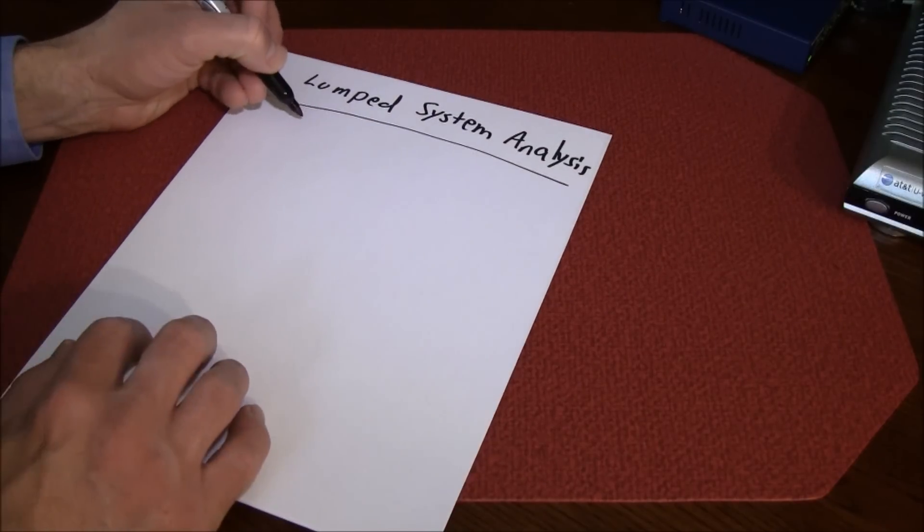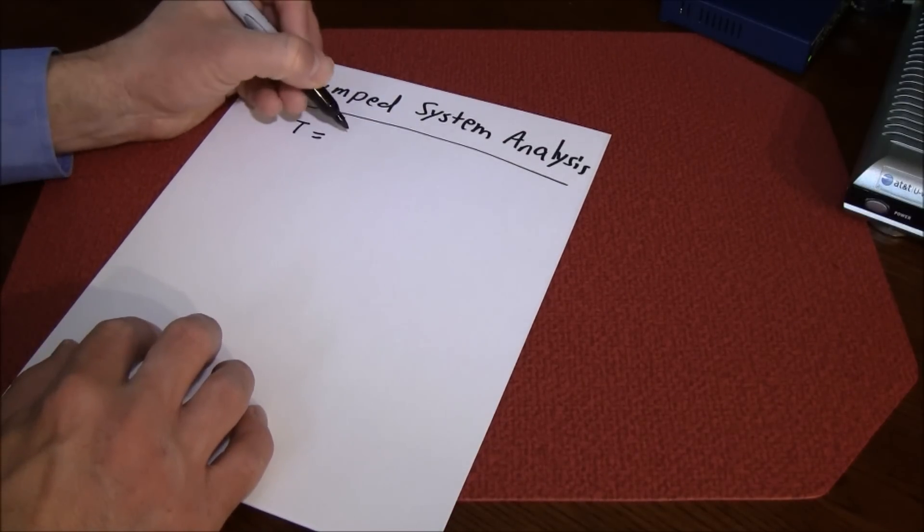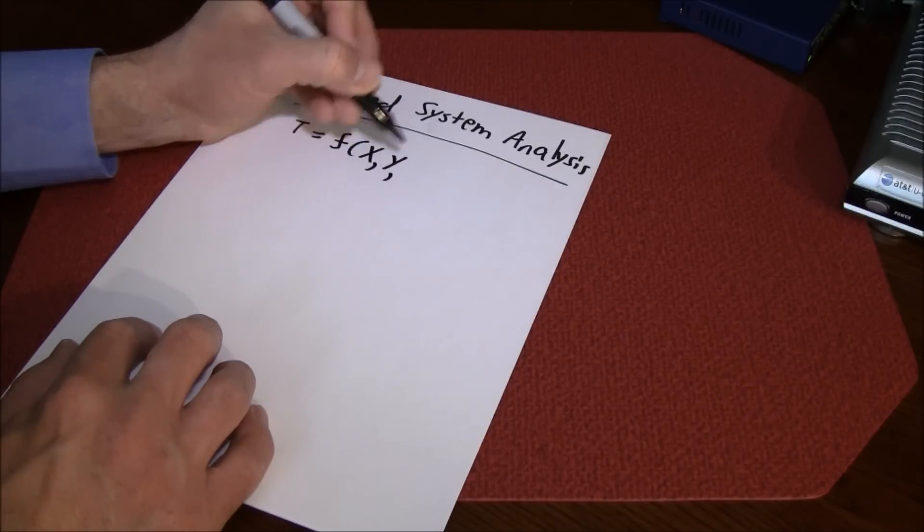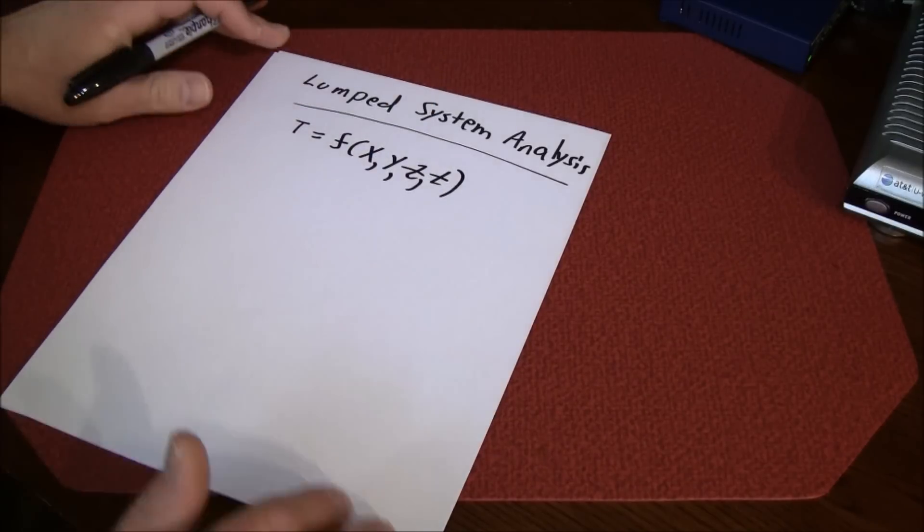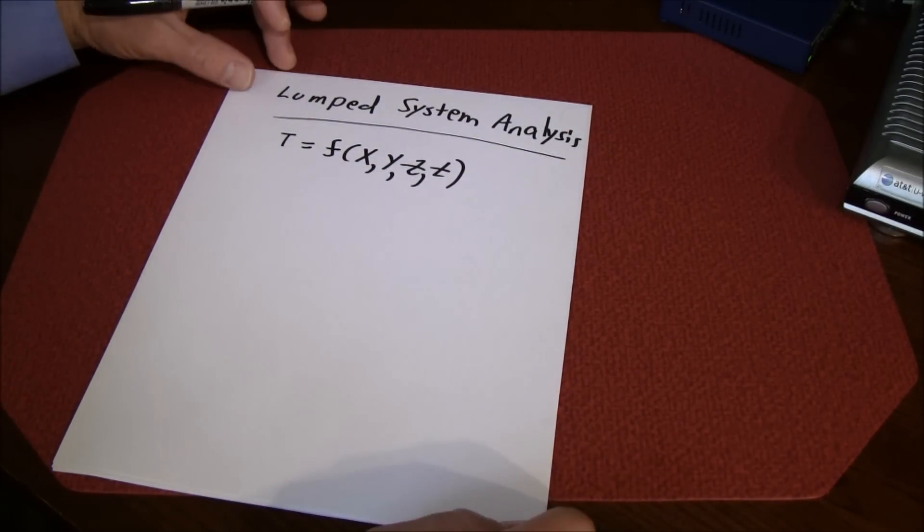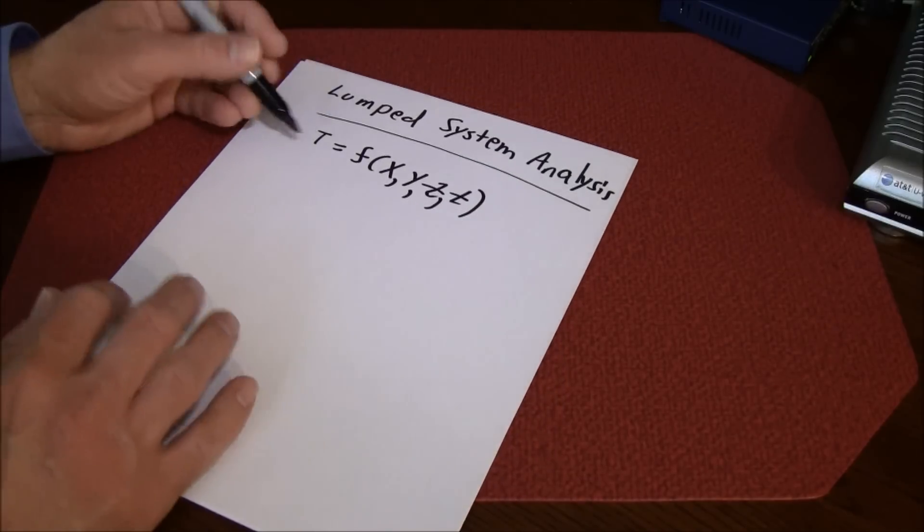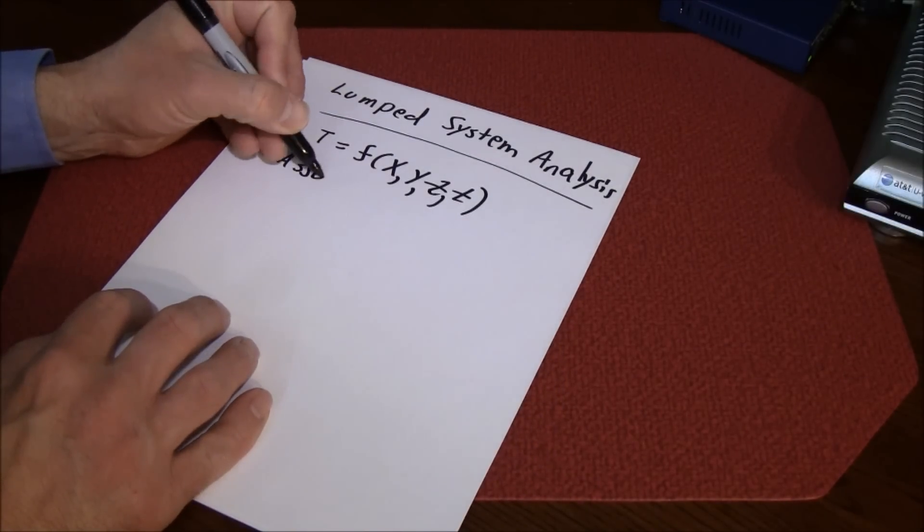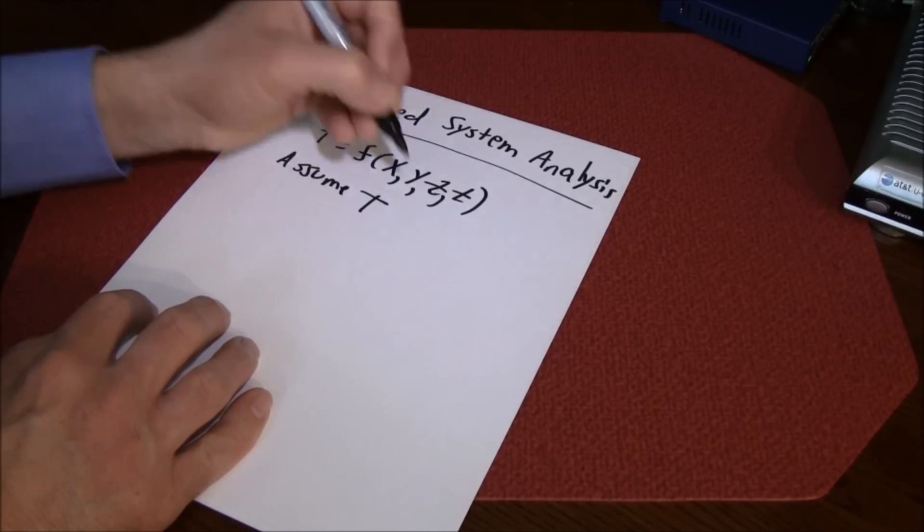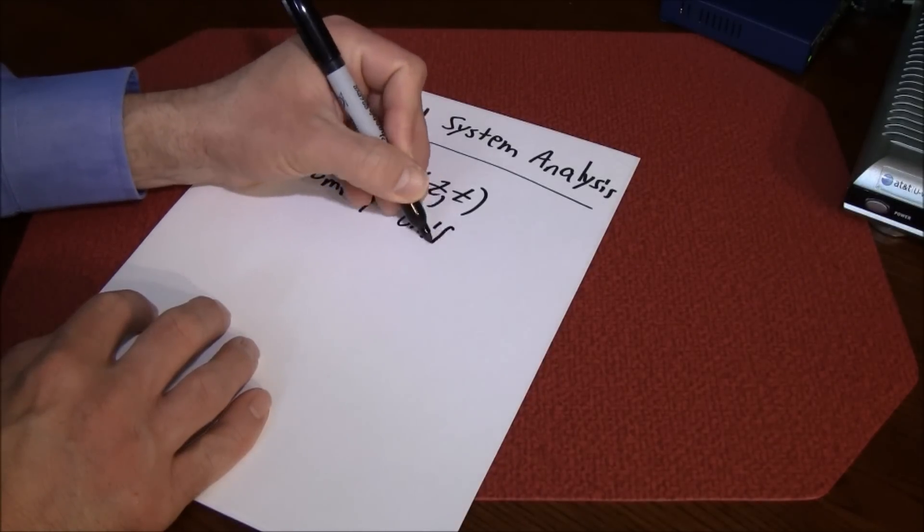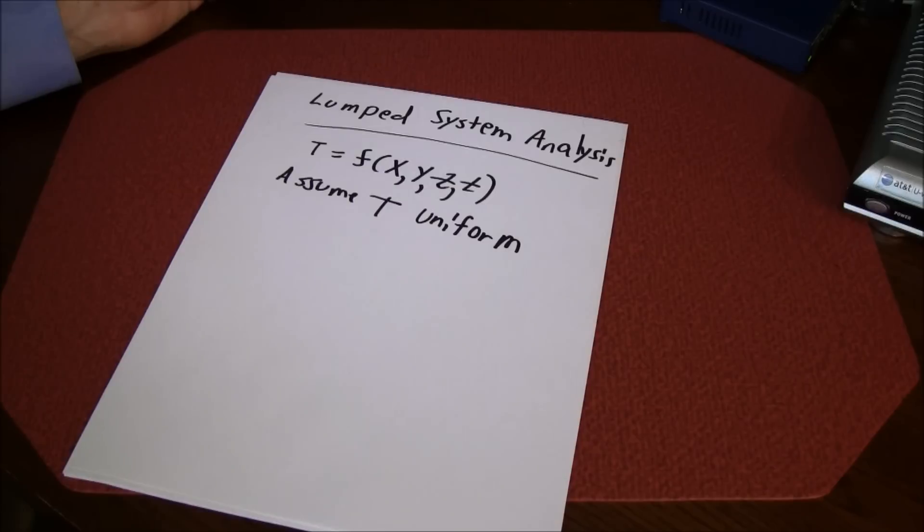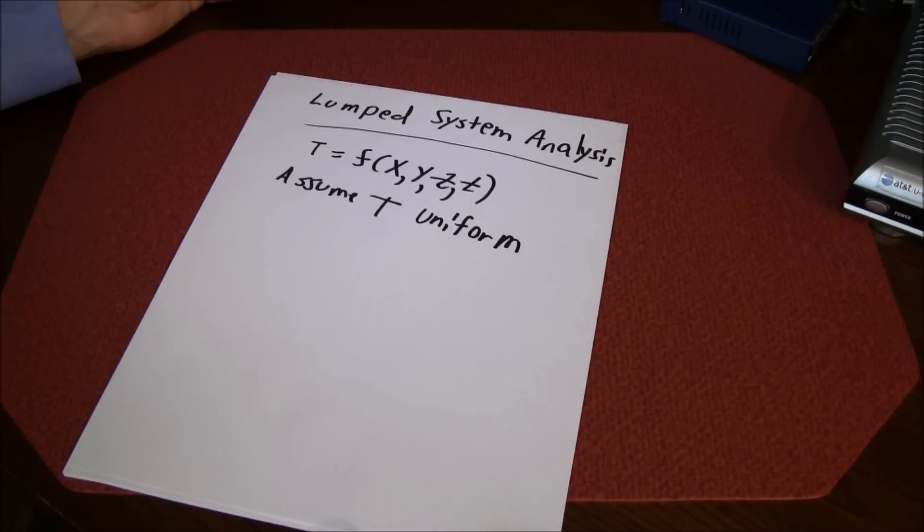In general, if we look at rectangular coordinates, the temperature is a function of x, y, z, and t. The little t is for time. In the lump system analysis we assume that the temperature at any time is uniform, so the temperature is not a function of position, it's only a function of time.